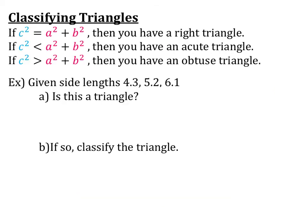Using the converse of the Pythagorean theorem, we are able to classify our triangles. So we know that if C squared equals A squared plus B squared, then we have a right triangle. But if C squared is less than A squared plus B squared, we have an acute triangle. And if C squared is larger than A squared plus B squared, then we have an obtuse triangle. So if we have the three side lengths, we are able to classify that triangle by its angles.